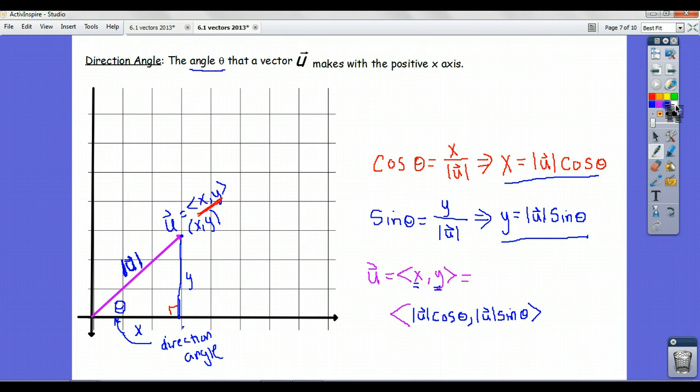This is important because if our vector is given to us by describing the direction angle and the magnitude, we can recover the component form just by multiplying the magnitude times cosine of theta to get the x-component and the magnitude times sine of theta to get the y-component. In the next video, we'll do an example of that.